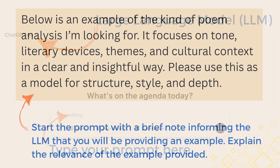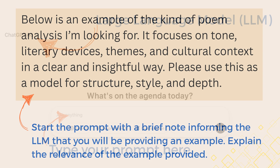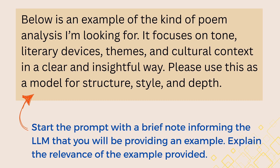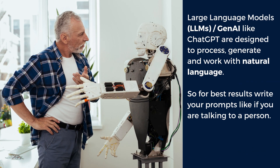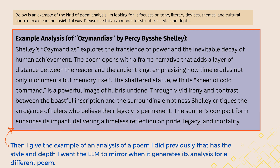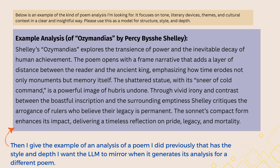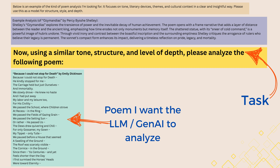For this prompt, I'll be using the ChatGPT 4O LLM model. I prime GPT by saying: below is an example of the kind of poem analysis I'm looking for. It focuses on tone, literary devices, themes, and cultural context in a clear and insightful way. Please use this as a model for structure, style, and depth. Remember, large language models like ChatGPT are designed to process, generate, and work with natural language — the way humans communicate — so for best results, write your prompts like you're talking to a person. Then I give the example analysis, and finally I state the task and give the LLM the poem I want to analyze.